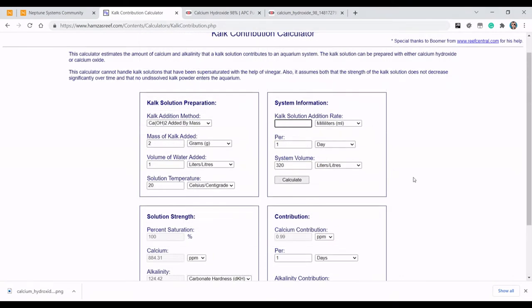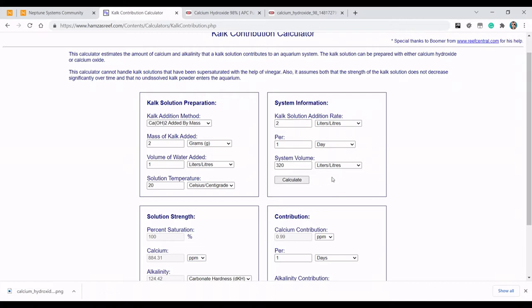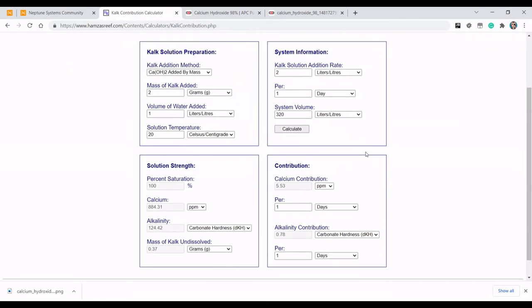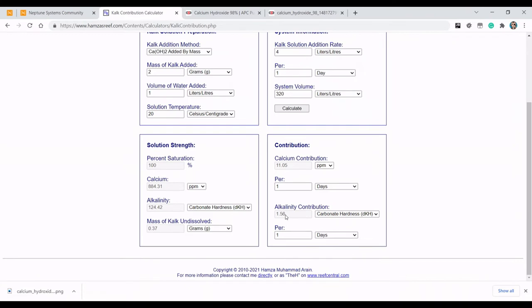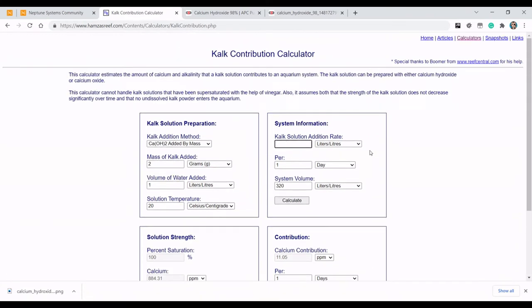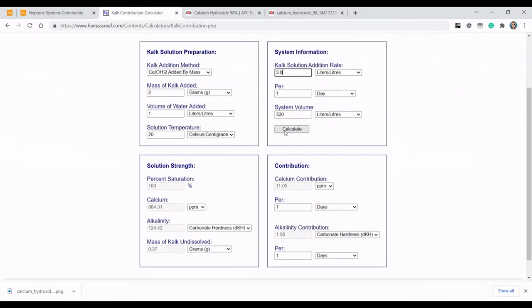Let's see how much saturated Kalkwasser I would need to add to meet the full 1.4 dKH alkalinity consumption my tank has. If I was to add 2 litres of pure saturated Kalkwasser to my aquarium, I would still only be adding 0.7 dKH per day of alkalinity in my tank, which would be half of what I would need. If I put in 4 litres, we're getting 1.56, which is slightly above. So, I probably need about 3.8 litres of pure saturated Kalkwasser to meet my alkalinity consumption.